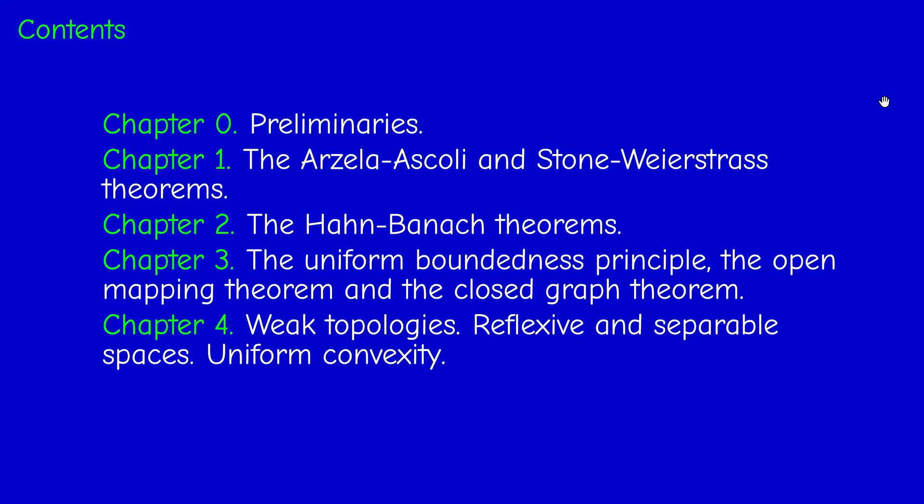Chapter four is lengthier than the others. It's about weak topologies, so topologies that you can put on a vector space other than the norm topology. We'll talk also about reflexive spaces, separable spaces, and uniform convexity. So this is maybe the most difficult chapter in this course, because we'll mix everything we learned before. And usually most of the questions in the exam are about this chapter. So this is really a synthesis of functional analysis.